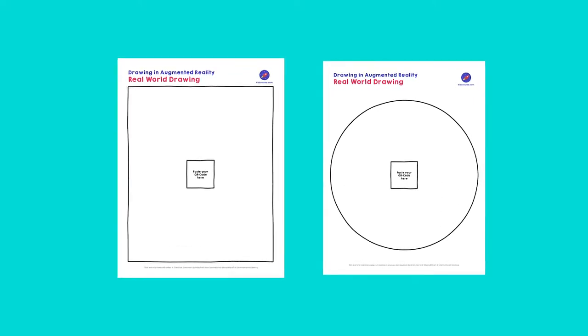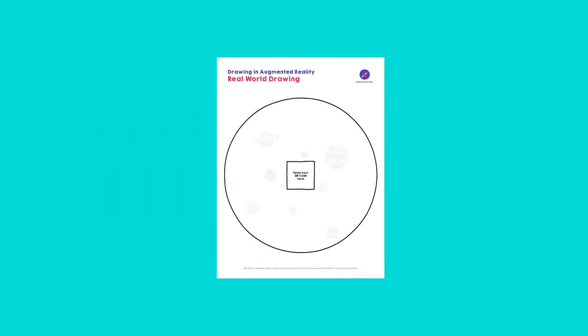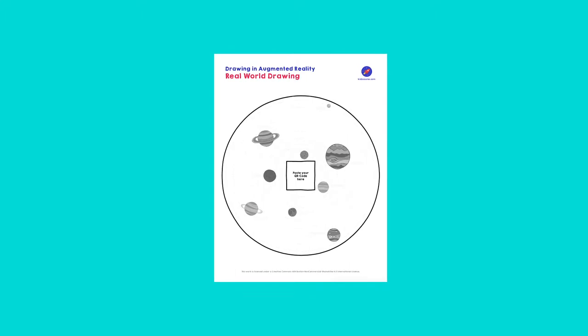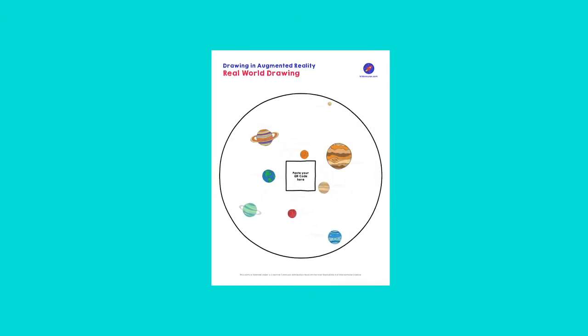There are two versions: a rectangular one and a round one. You can choose one of the two. I choose the round one. Then you make your drawing — I draw the planets and give them all a nice color.